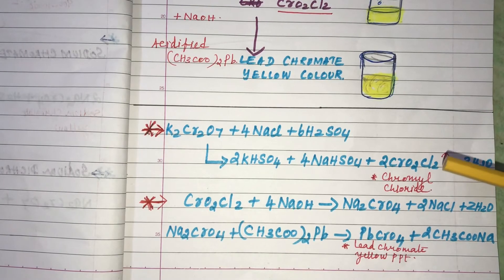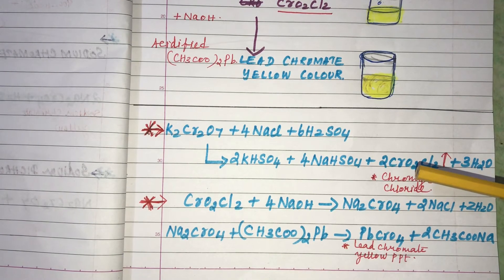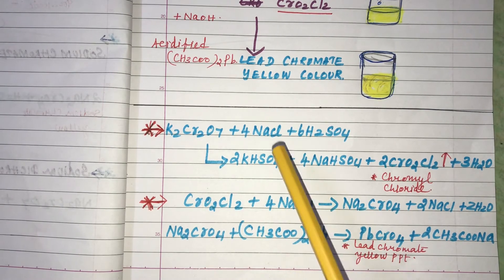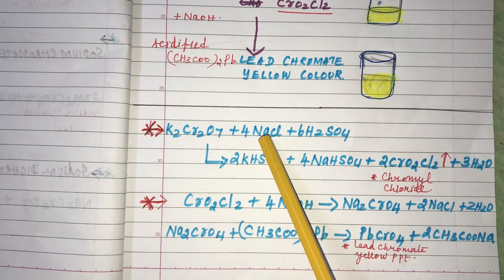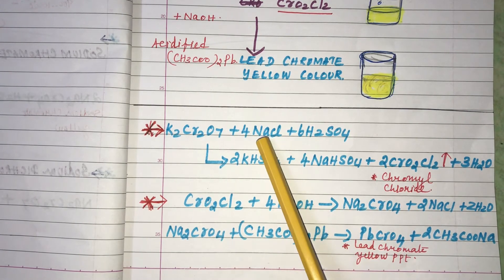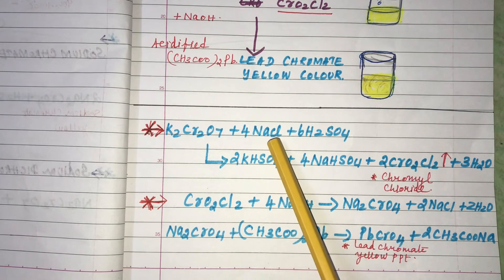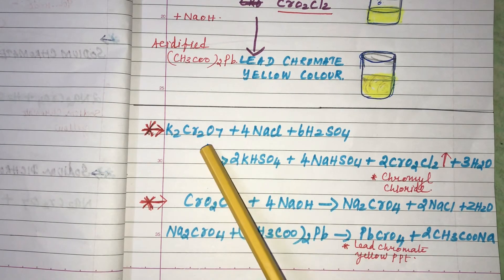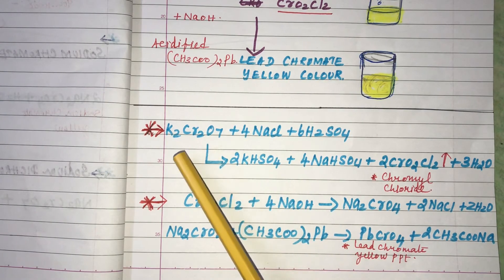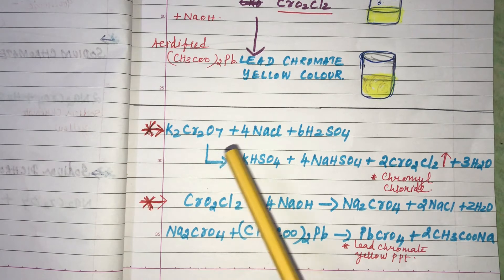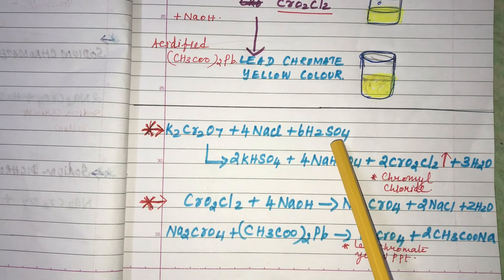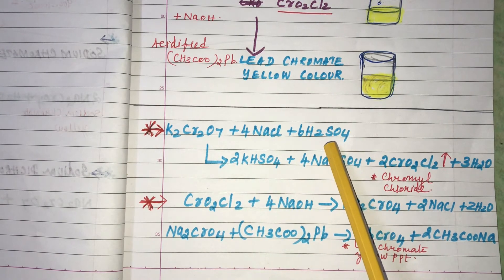Now we are going to see the equation for the above explanation. What we are taking is Sodium Chloride as the chloride salt, Potassium Dichromate K₂Cr₂O₇, and concentrated Sulphuric Acid.